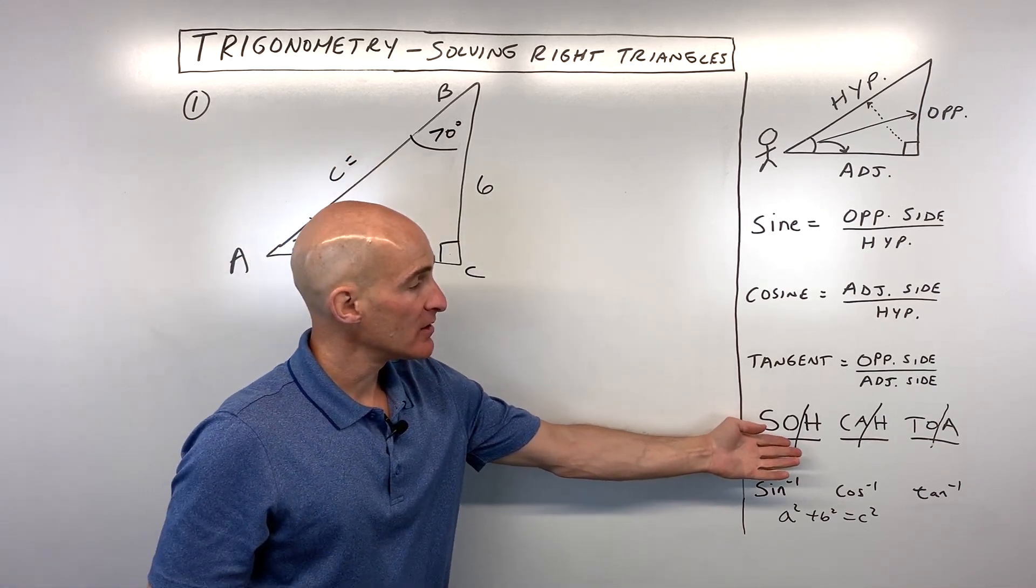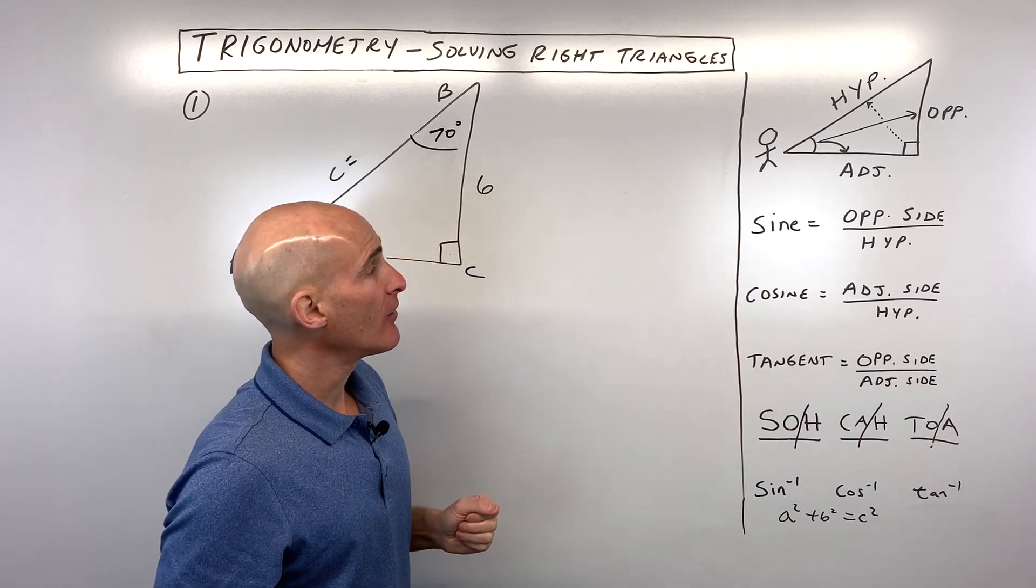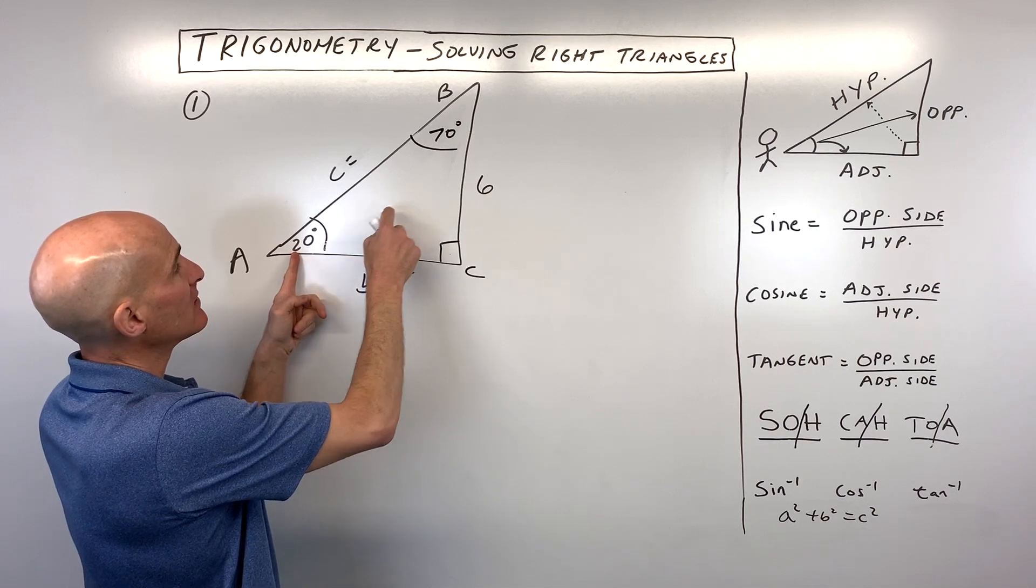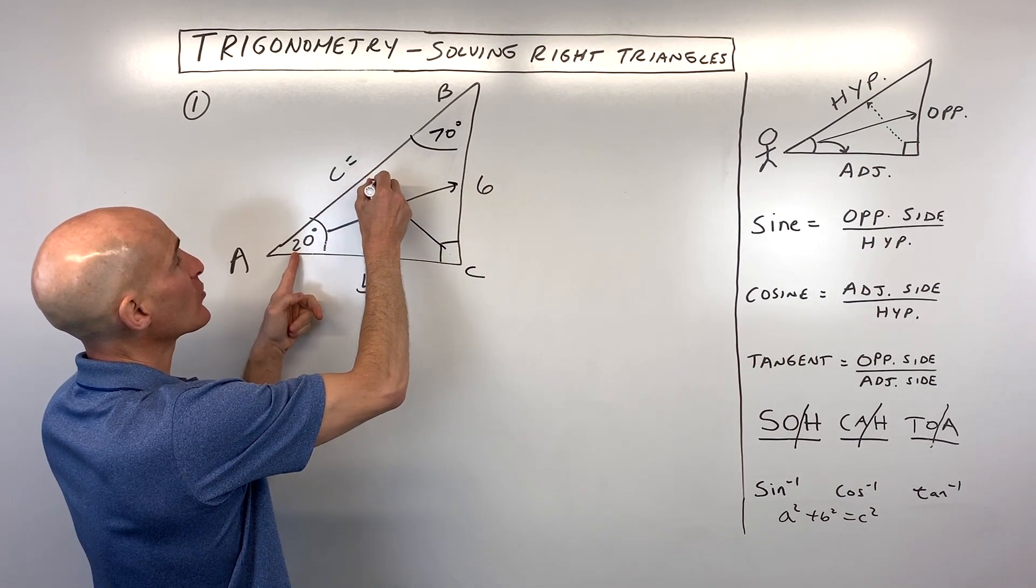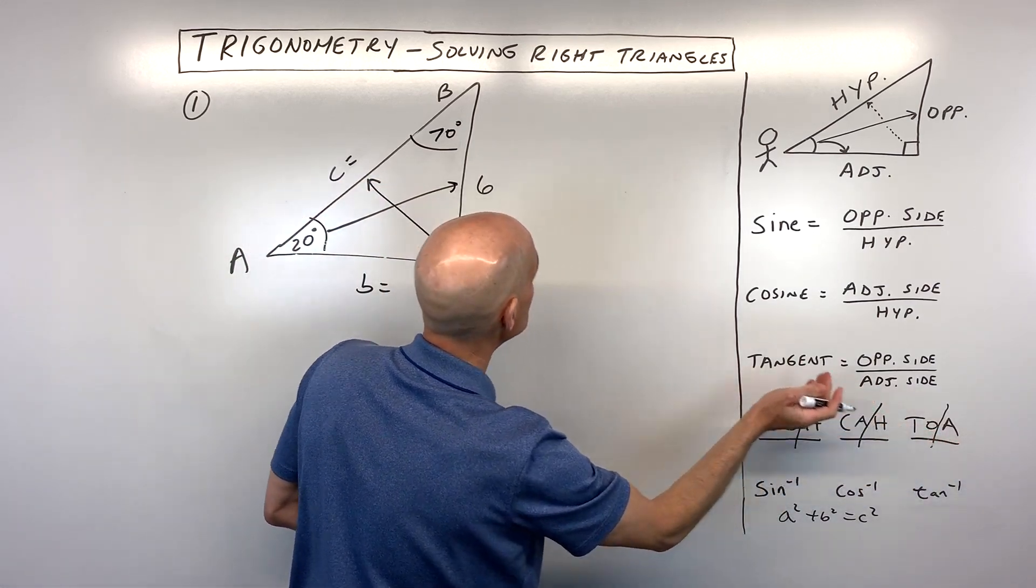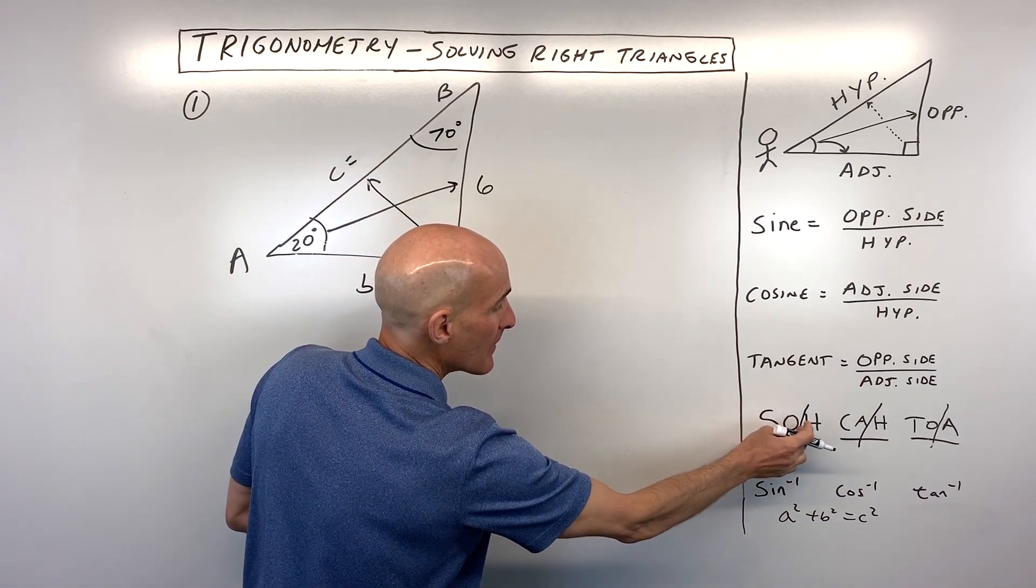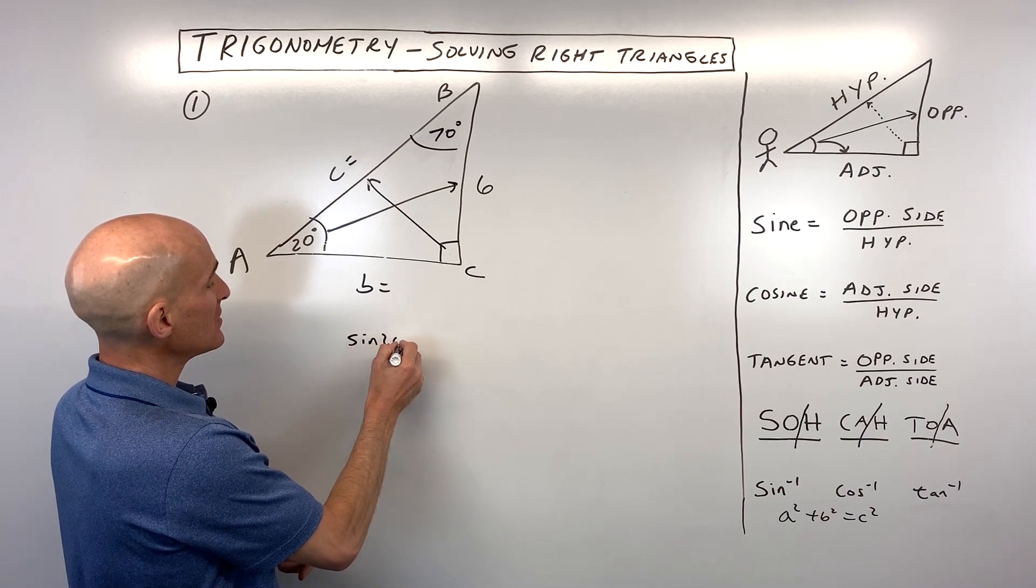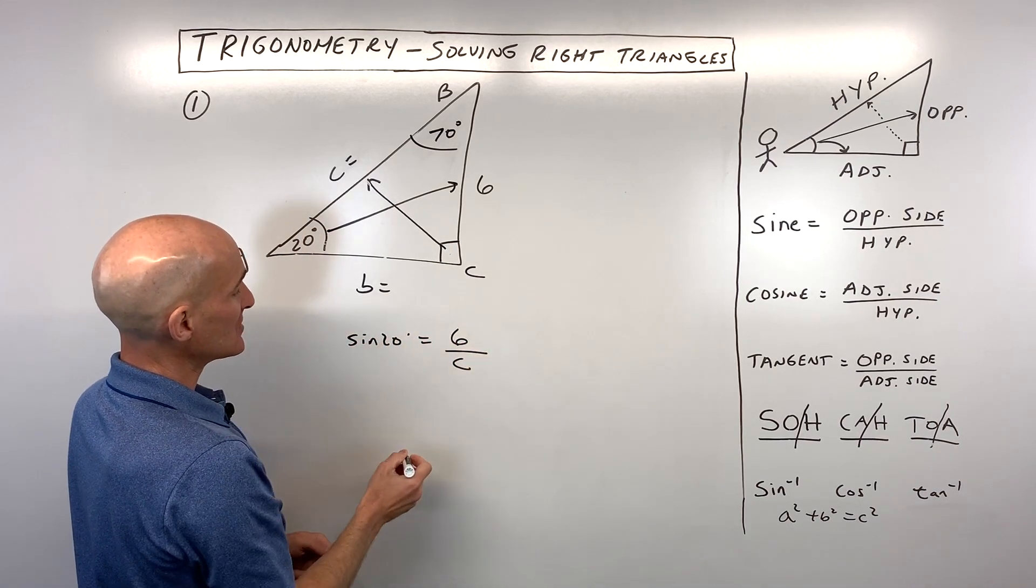That's where we're going to use our SOHCAHTOA or our trigonometric ratios. So if we're using angle 20, this side 6 which is the opposite side, and the one across from the right angle which is the hypotenuse, which trig function - sine, cosine, or tangent - ties together opposite and hypotenuse? Well you can see opposite hypotenuse, that's S, that's sine. So we've got the sine of 20 degrees equals opposite 6 over hypotenuse C.